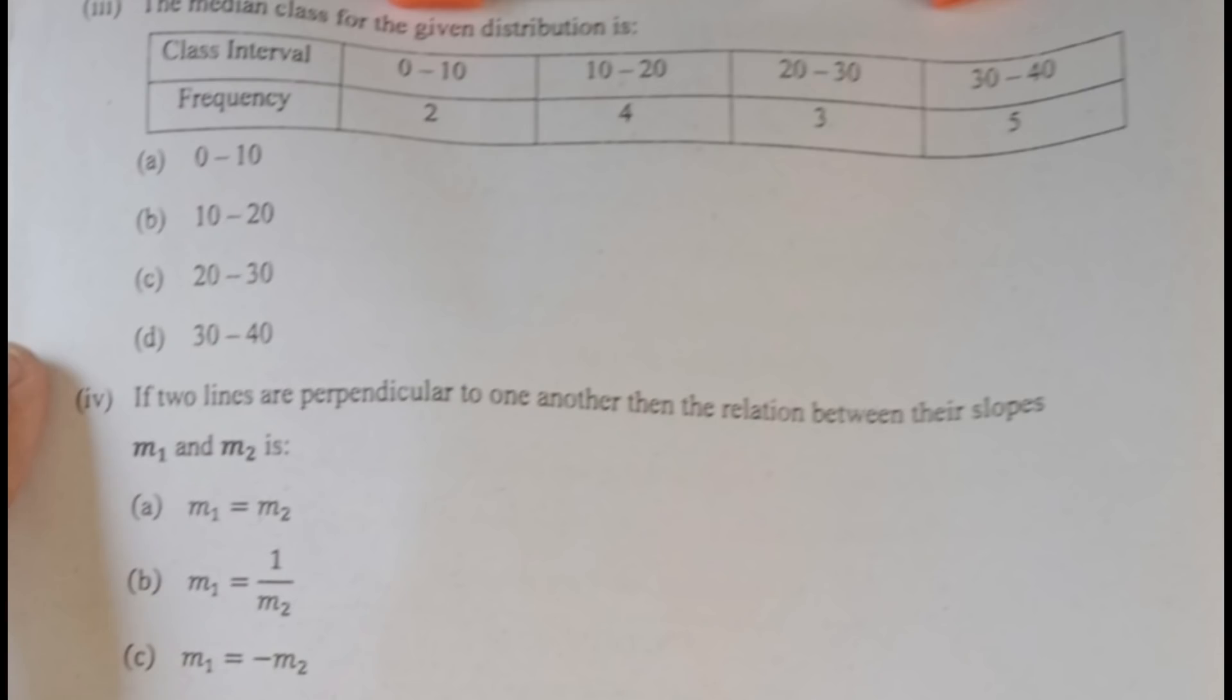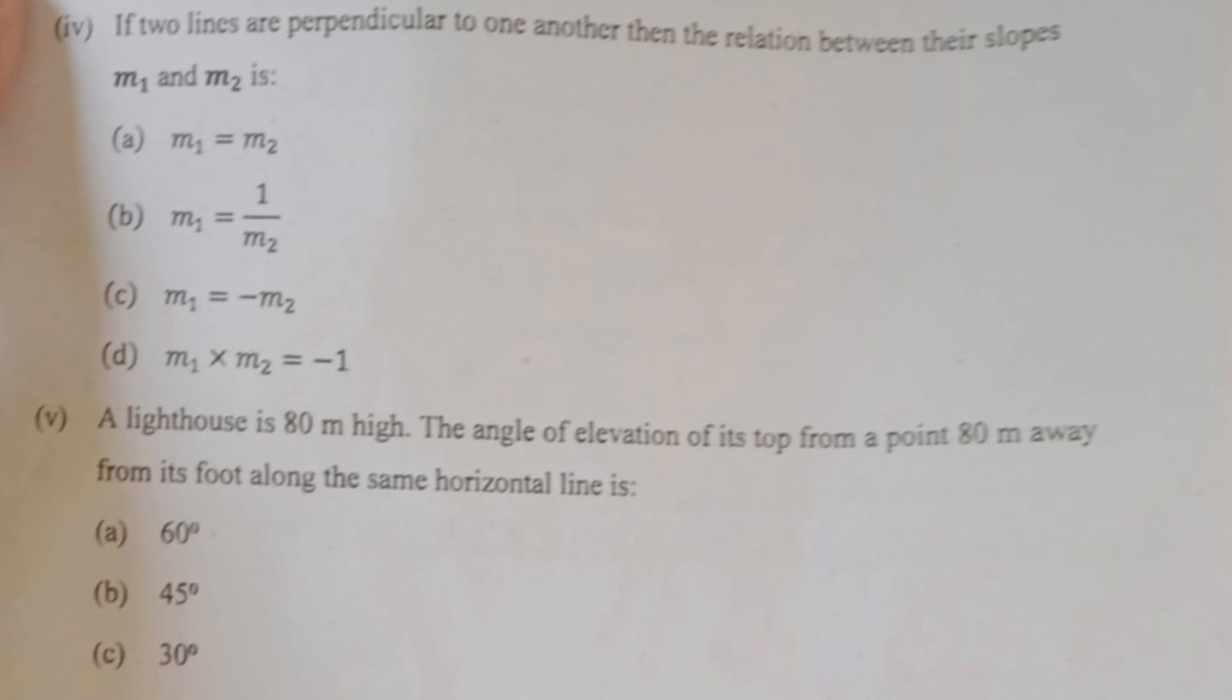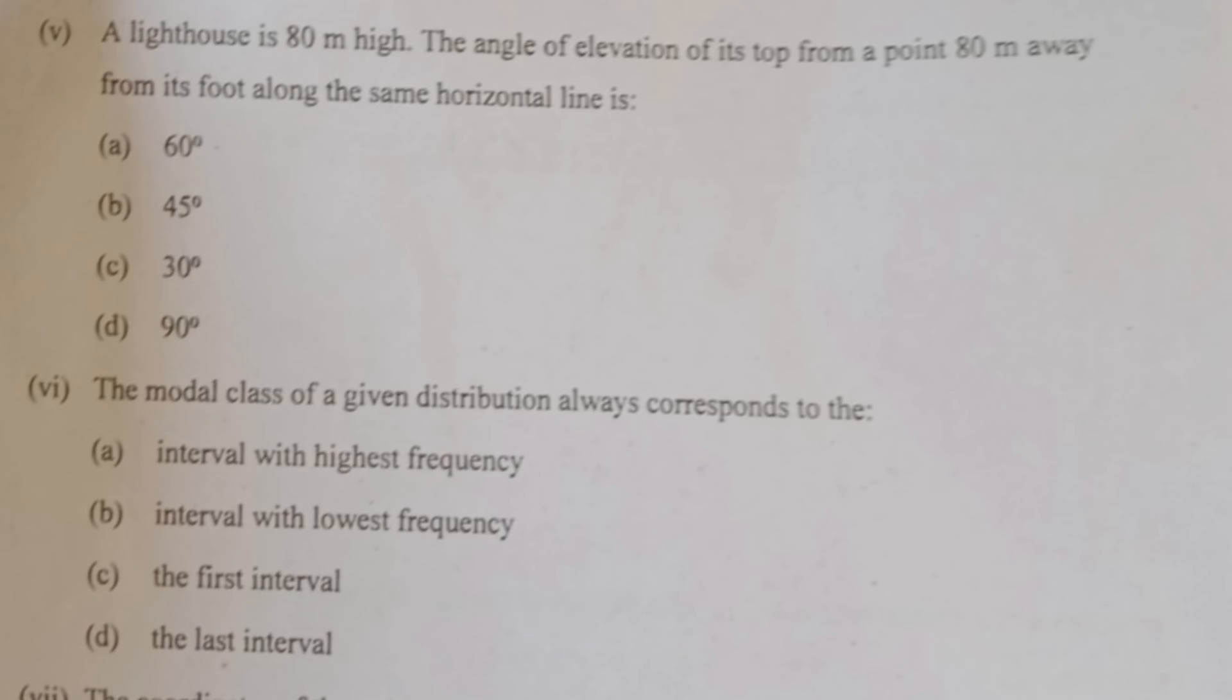Let me go through the options so that it will be faster for you. Question 3: the correct option is C, 20, 30. Question 4: if two lines are perpendicular, the correct option is D. Question 5: a lighthouse is 80 meters high, the correct option is B, 45 degrees.